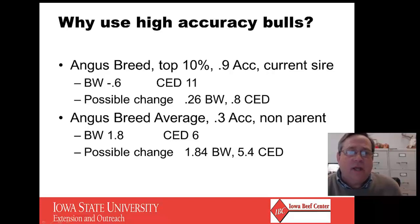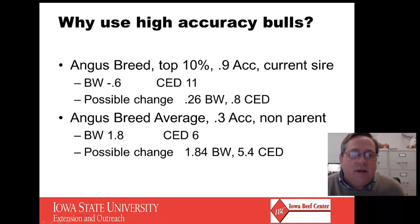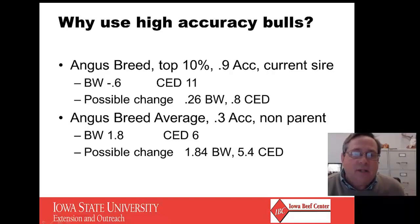Why would you use high accuracy bulls? If you look at the Angus breed and try to go to the top 10% for calving difficulty issues, with a .9 accuracy, birth weight would be minus 0.6 and calving ease direct would be 11. The possible change then at .9 accuracy would only be 0.26 or 0.8 on calving ease — so it's very likely that number is correct. On the other hand, if you're using a non-parent bull with only .3 accuracy, the EPD could easily be 1.8 different on birth weight and 6 different on calving ease direct. Two-thirds of the time there could be a pretty large difference on lower accuracy bulls.